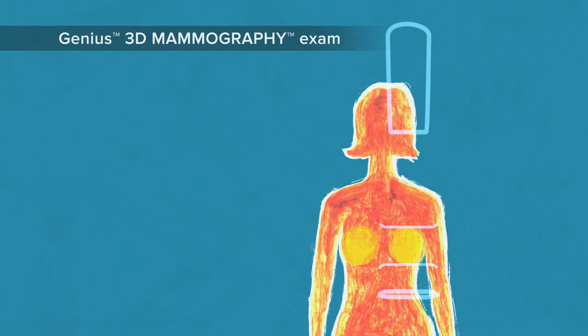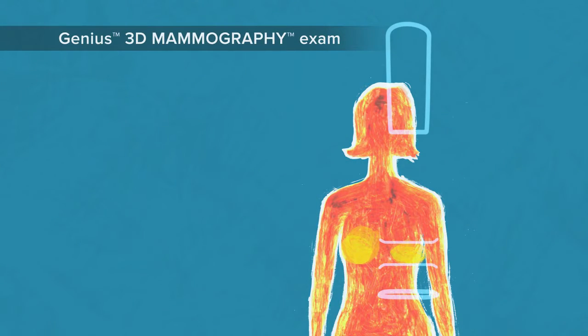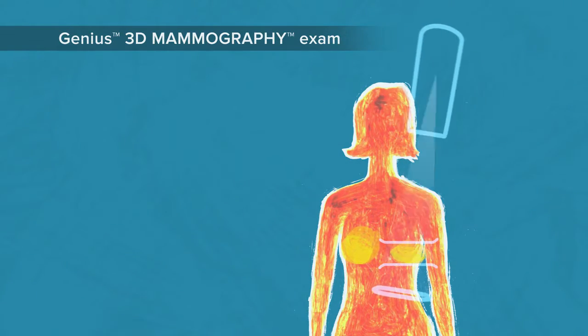A Genius 3D mammography exam looks and feels similar to a regular mammogram. However, the x-ray arm swings over your breast, taking multiple images in a matter of seconds.